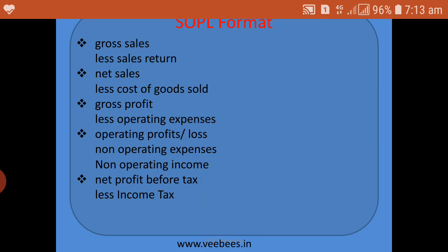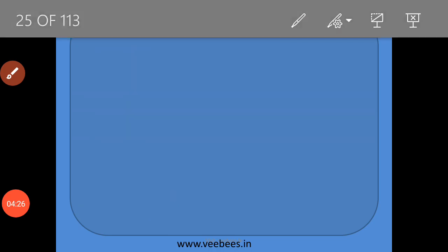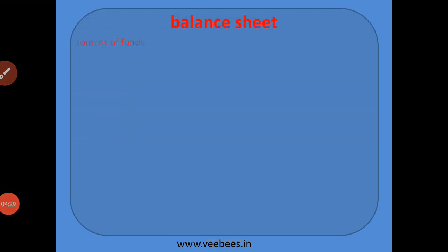This statement is the Statement of Profit or Loss. For analysis purposes, we also have a different format in the notebook — this is the balance sheet format. In this format, the balance sheet has two main headings: sources of fund and application of fund. The liability side represents the sources of fund.